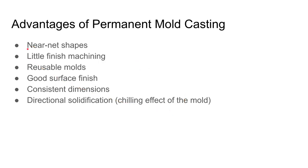A net shape part requires no machining or post-processing at all — like Lego bricks that come out of the mold ready to use. Permanent mold casting produces near-net shape parts, because there's a little finishing needed to remove gates and runners. In general, die castings break free from the runner system fairly easily, and the result is a bit neater than sand casting.